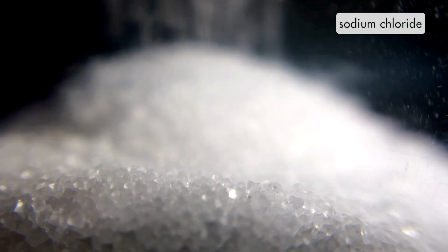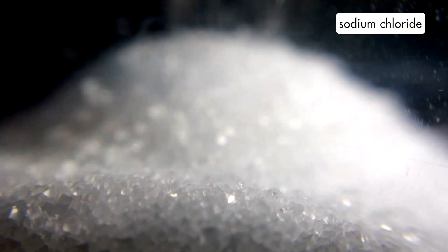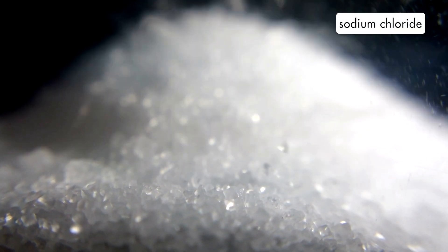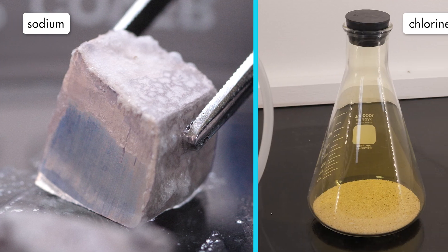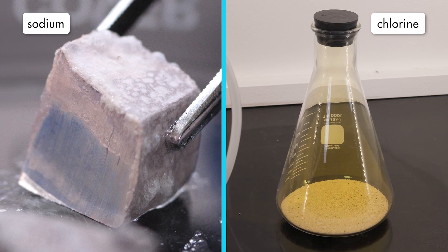The scientific name for salt is sodium chloride. Sodium chloride is a chemical compound formed by combining sodium, a soft, highly reactive metal, and chlorine, a toxic, greenish-yellow gas. When these two elements chemically combine, they react explosively to form sodium chloride.